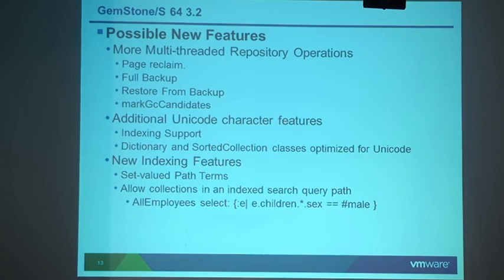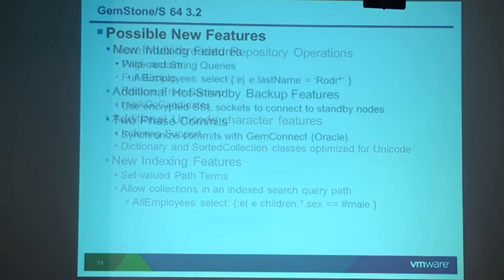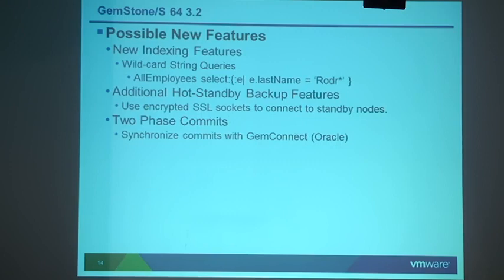Implementing set-valued path terms involves fairly complicated changes inside the indexing system. We've also wanted wildcard queries and string matches for a long time — basic stuff like last name equals 'rod*'. You can go crazy with regex expressions, but it would be nice to just support star and question mark to start with, and then see where it leads from there. It's harder to implement than it looks, but we think it can be done.